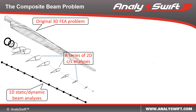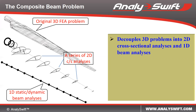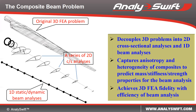Compared to other approaches, VIPS has the following unique features. First, it rigorously decouples the 3D problem into two-dimensional cross-sectional analysis and one-dimensional beam analysis. Secondly, it captures anisotropy and heterogeneity of components to predict the mass, stiffness, and strength properties for the beam analysis, and 3D stresses, strength, and failure. Last, it achieves 3D FEA fidelity with the efficiency of beam analysis.